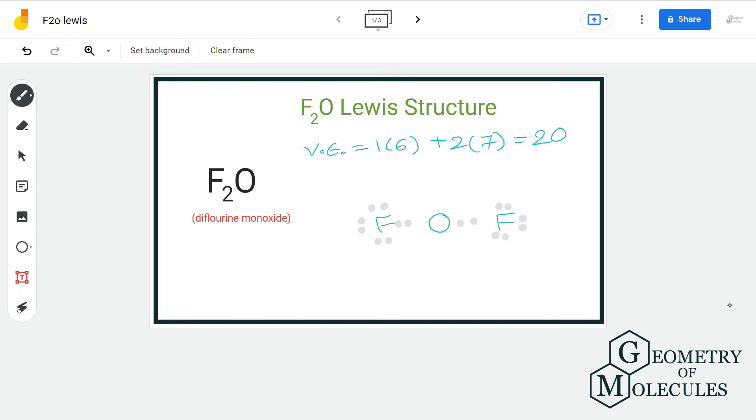We are still left with four more electrons and oxygen needs four electrons to complete its outer shell, so we will assign the remaining electrons to it. This is the final Lewis structure of F2O. For more such videos, make